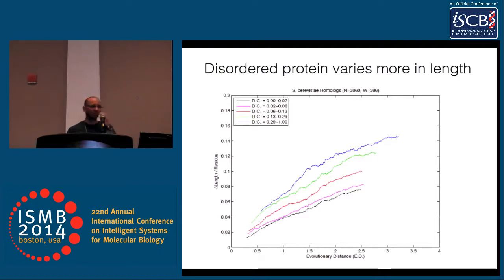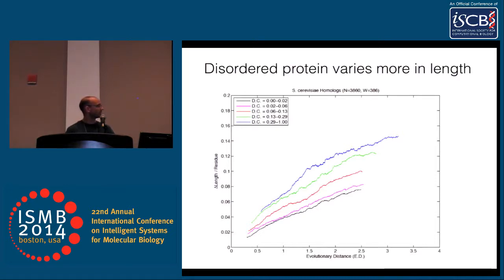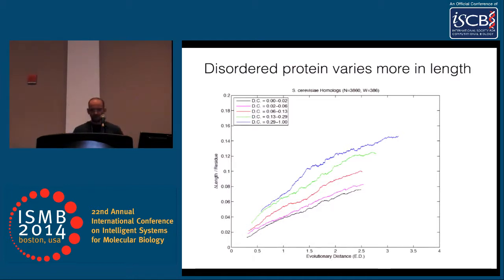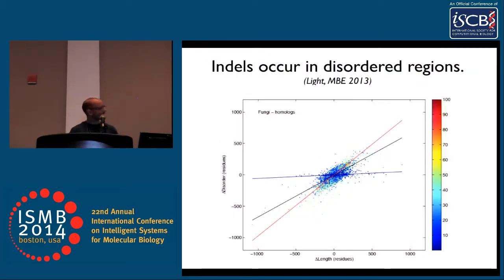When you divide the dataset by evolutionary distance and by disorder content into five categories — from less than 2% disorder to more than 30% disorder — you see that disordered proteins have about 8% gaps per mutation, while ordered proteins have only about 4%. There is a clear linear increase in gaps with evolutionary distance, before it flattens out. Disordered proteins clearly have many more insertion/deletions.